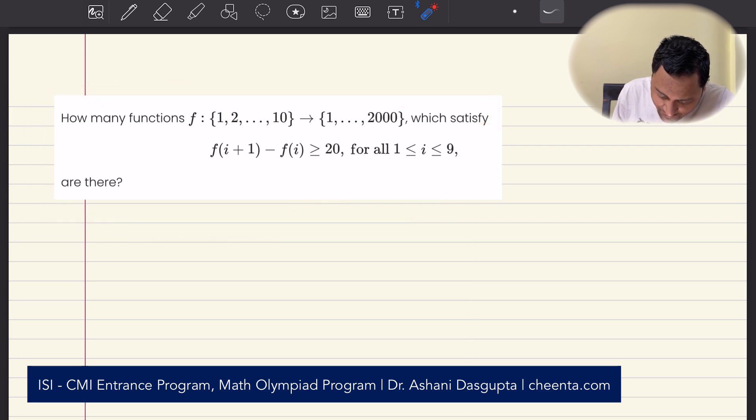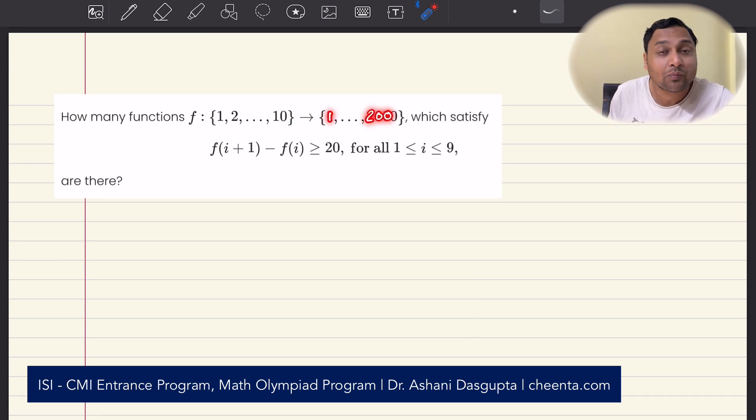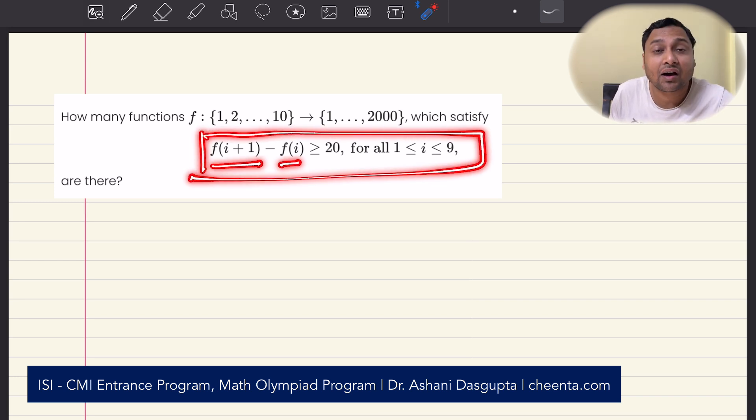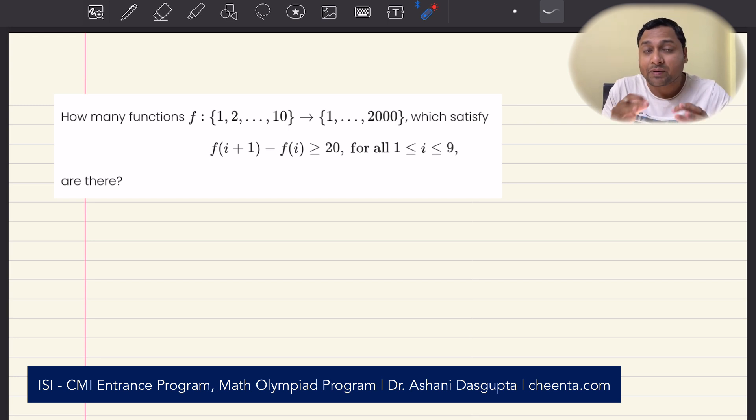So the problem says that we have a function from 1 to 10, the domain of the function are the 10 integers 1, 2, 3, 4, up to 10 and the co-domain is 1 to 2000. So the output values are from 1 to 2000. We want to find all such functions which satisfy this particular condition - it's a very special type of function such that the consecutive output values are separated by 20 or more.